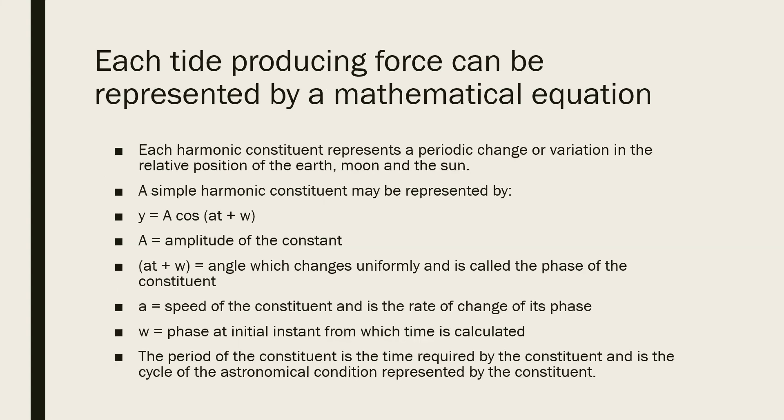Each tide producing force can be represented by a mathematical equation. Each harmonic constituent represents a periodic change or variation in the relative position of the earth, moon, and sun. A simple harmonic constituent is represented by the equation y = A cos(at + w), where A is the amplitude of the constant.